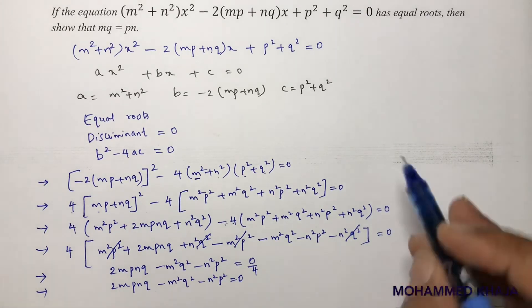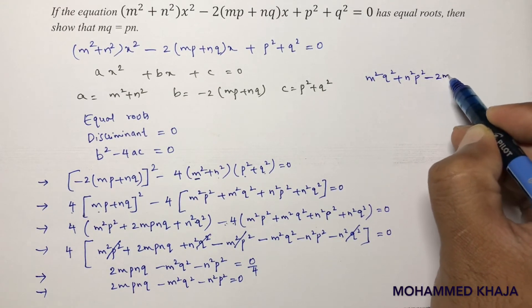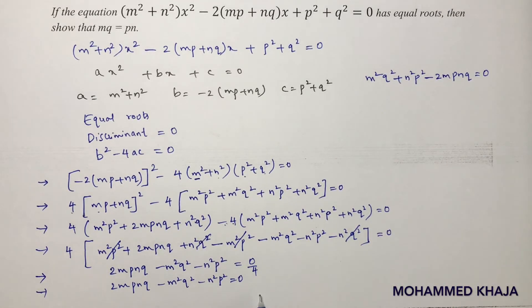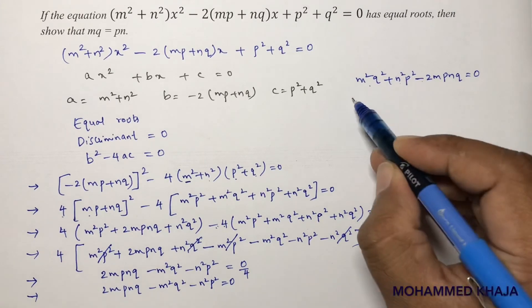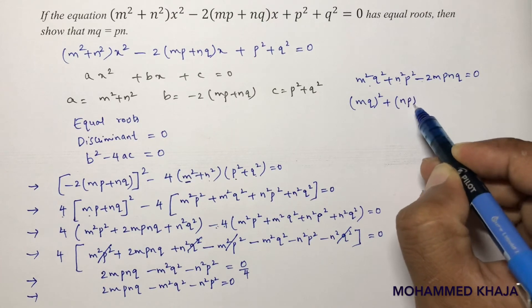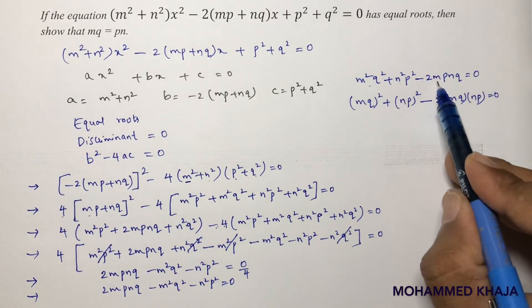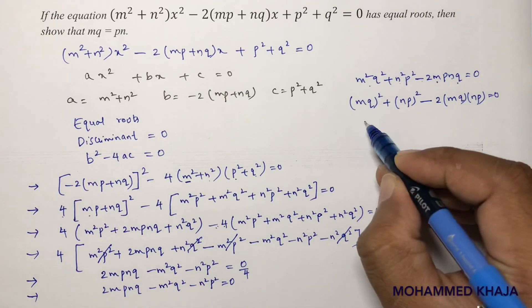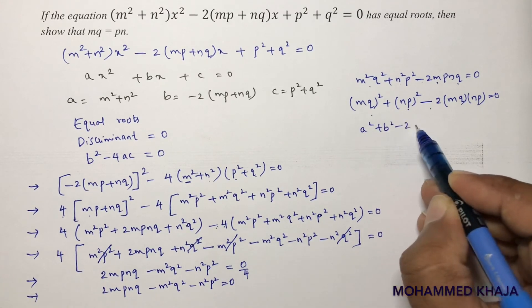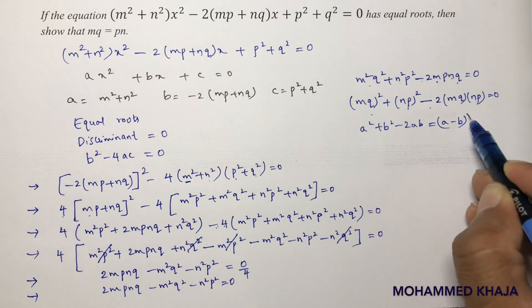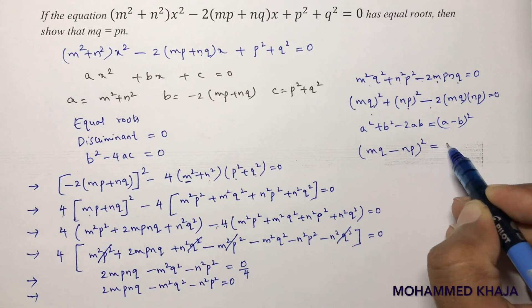Transposing, we observe this is in the form a² + b² − 2ab = (a − b)². So we can write (mq)² + (np)² − 2(mq)(np) = (mq − np)² = 0.